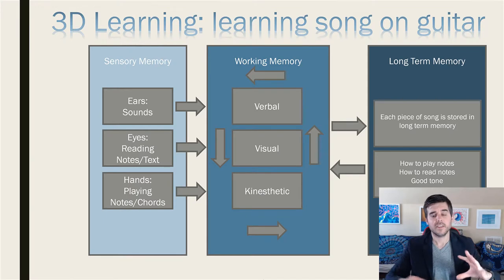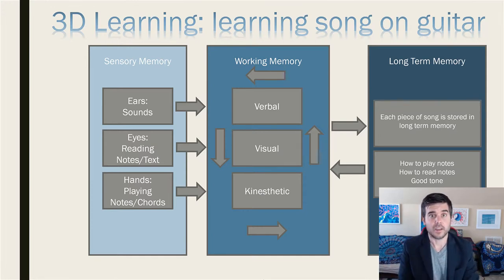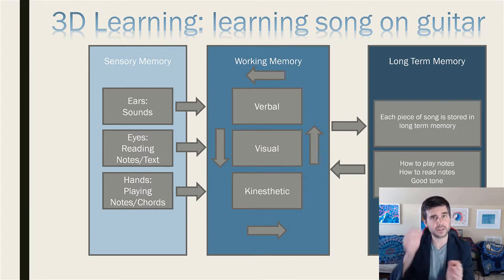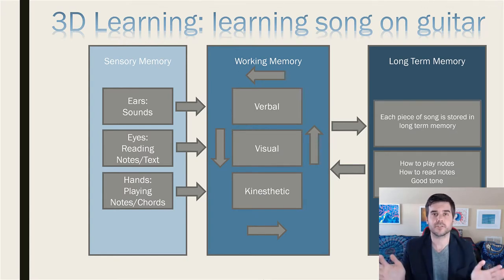And then we have our long-term memory, which is where we store everything. We can break down long-term memory a little more - some of the literature does - but we're not going to do that here. So, 3D learning says that we have multiple channels; we're using multiple things, and these things are not competing with each other. There are really three different types of things happening at the same time when we're learning a song on the guitar.